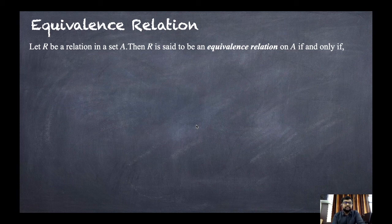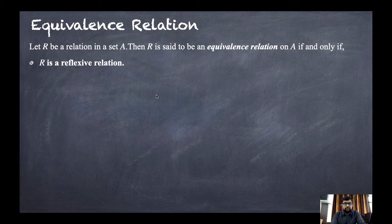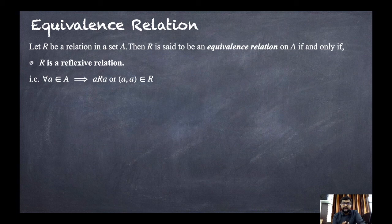The first condition: R is a reflexive relation. As discussed in the previous session, a reflexive relation means for every element a in A, a is related to itself — that is, (a, a) belongs to the relation R.